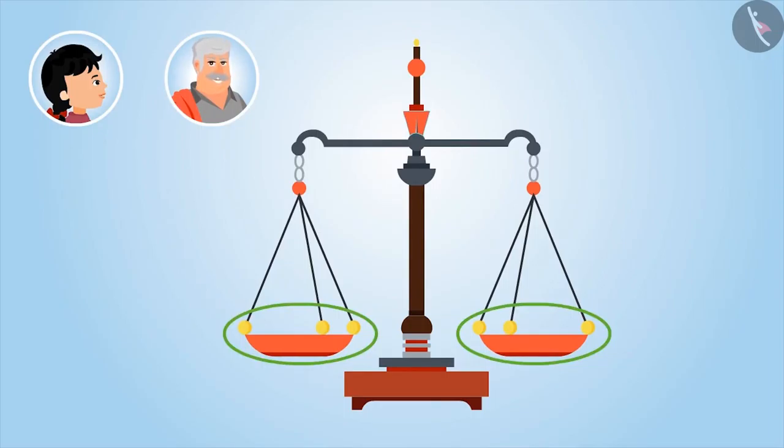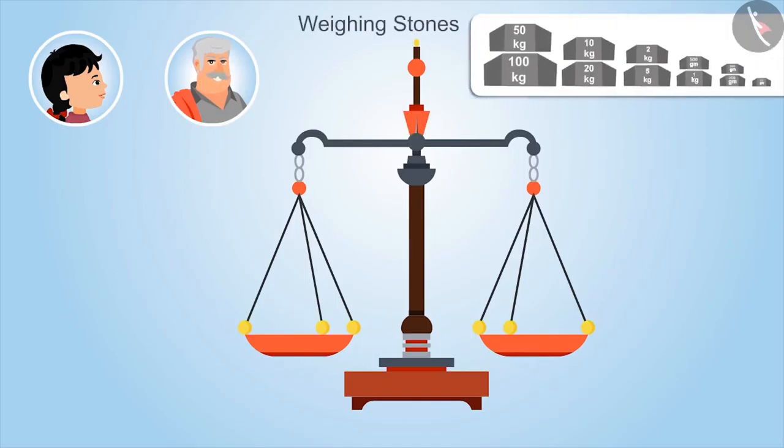Look here. Right now, both of these plates are empty and the needle is facing towards the center, which means the needle is balanced because both the plates are of equal weight. We use weighing stones to measure weight in a weighing scale.